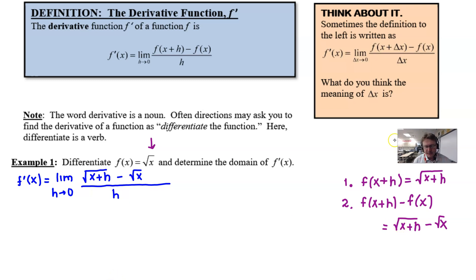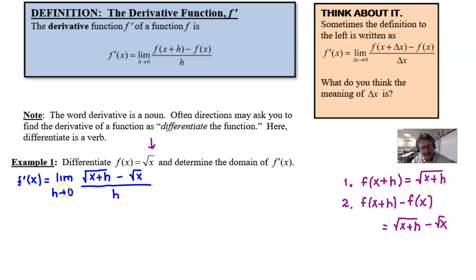How much work you put in during unit one will largely determine how you can solve this limit. You have to recognize that you cannot plug zero in for h — this is not a 'green light' limit where you can directly substitute. If we try that, we get √x minus √x over zero, which is zero over zero — an indeterminate form. We have to work harder.